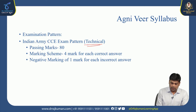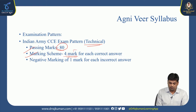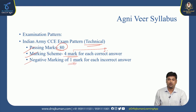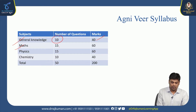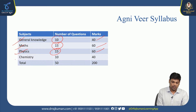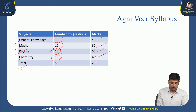Next, Technical. Passing mark is 80. Marking scheme: 4 marks for each correct answer, and negative marking 1 mark for each incorrect answer. GK: 10 questions, 40 marks. Math: 15 questions, 60 marks. Physics: 15 questions, 60 marks. Chemistry: 10 questions, 40 marks. Total: 50 questions for 200 marks.